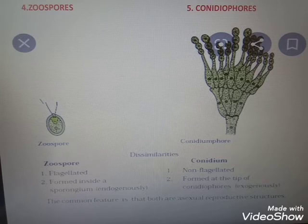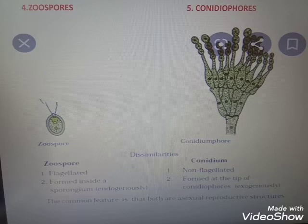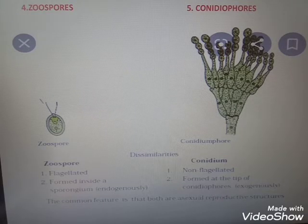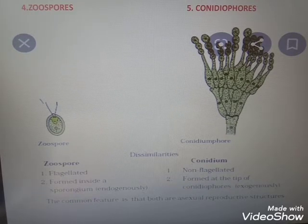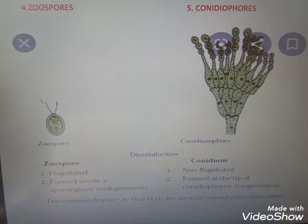Conidia are non-flagellated spores with a thick wall, formed at the tip of conidiophores and produced exogenously — meaning the spores are produced outside. Zoospores are endogenous and motile, while conidiophore spores are exogenous and non-motile.